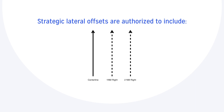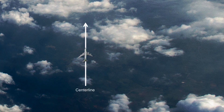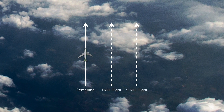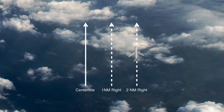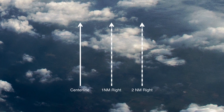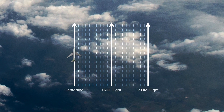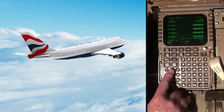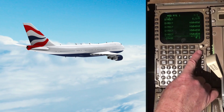Strategic lateral offsets are authorized to include centerline and up to 2 nautical miles right of centerline. The SLOP options available to an aircrew depend on the capability of the aircraft. For aircraft capable of offsets in 1 nautical mile increments, the choices are centerline, 1 nautical mile right, or 2 nautical miles right. For the correct application of SLOP procedures, consult the local AIP and/or chart supplements for the airspace which you will be traversing.